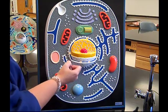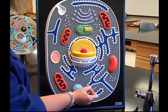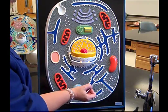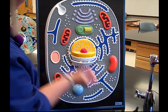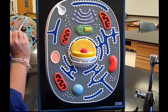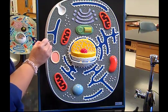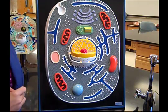On the outside of the nucleus, we see rough ER. We know it's rough because it has all of the ribosomes. Some of those ribosomes are free-floating throughout the cell. If we don't have ribosomes associated with the membrane, that's smooth ER.